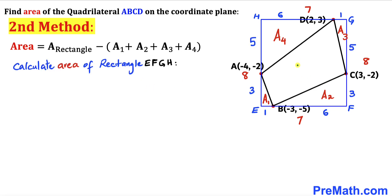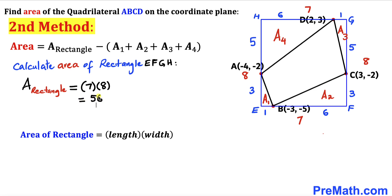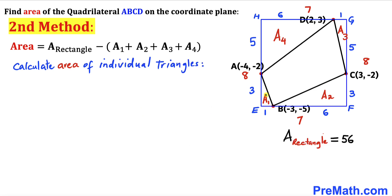Now let's calculate the area of rectangle EFGH. Using the formula: area = length × width, with dimensions 7 and 8, the area of rectangle EFGH is 7 × 8 = 56 square units.